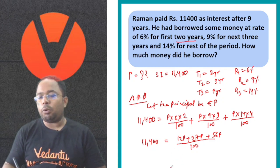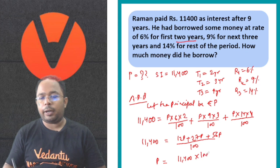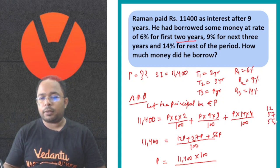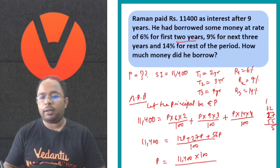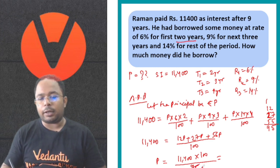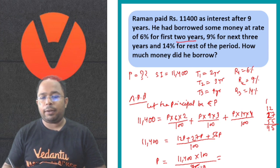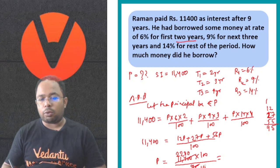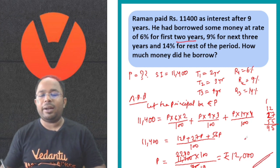So 11,400 = (12P + 27P + 56P) / 100. Adding: 12 + 27 + 56 = 95. So P = 11,400 × 100 / 95. Dividing: 11,400 / 5 = 2,280; 100 / 5 = 20; then 2,280 × 20 / 19... simplifying gives us P = Rs. 12,000. That is our right answer.